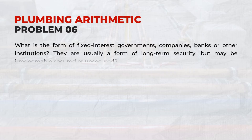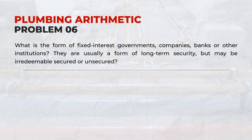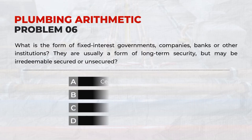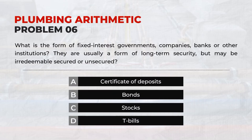What is the form of fixed interest issued by governments, companies, banks, or other institutions? They are usually a form of long-term security, but may be irredeemable, secured, or unsecured. Answer: B. Bonds.